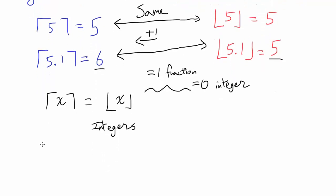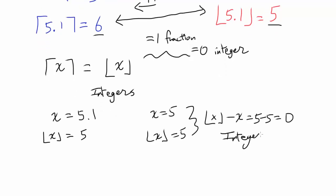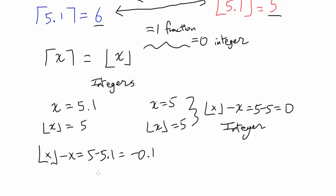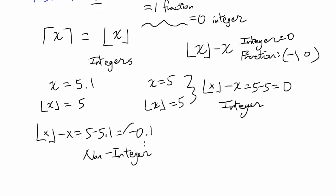Let's try testing this out. Say x is 5.1 — floor of x is 5. When x is 5, floor of x is also 5. What's the difference? Let's look at floor of x minus x. In the integer case, the difference is exactly zero. For a fraction, when you subtract x, you get 5 minus 5.1, which is negative 0.1. So floor of x minus x is zero for integers, and some number between negative 1 and 0 for non-integers.